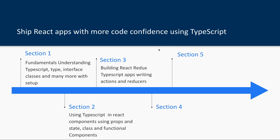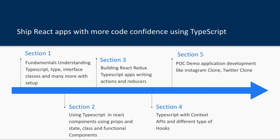We will also cover how to use TypeScript with React Redux Thunk or React Redux Toolkit — writing actions and reducers in TypeScript — and for single-page applications, TypeScript definitions for React Router DOM. We'll cover libraries like Formik, React Router DOM, React Redux, and React Redux Toolkit. Then TypeScript with Context APIs and hooks: useState, useEffect, useReducer, useContext. Section 5 is important — if you already know React with TypeScript, you can jump straight there, which covers a demo app like an Instagram clone.